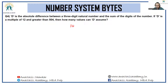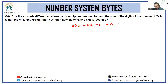A three-digit number can be written as 100a + 10b + c. Subtracting the digit sum (a + b + c) leaves 99a + 9b = 9(11a + b). So D is always a multiple of 9.